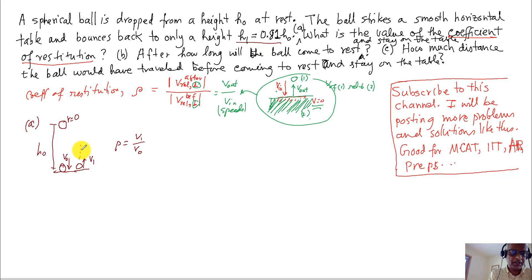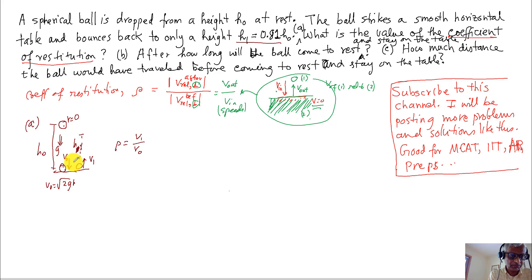If you know the dynamics — gravity is g — then the relation of speed to height is: V0 = √(2gh0). Here V0 is the impact speed, not initial velocity — don't confuse them. V1 is the speed after the first bounce, and similarly V1 = √(2gh1).